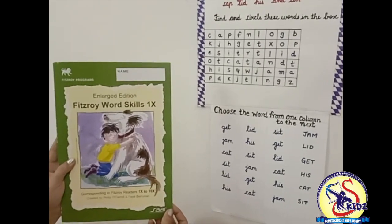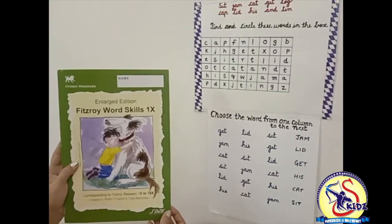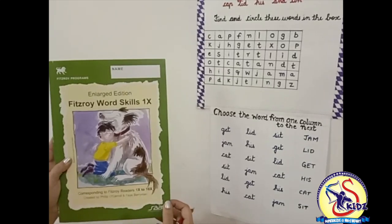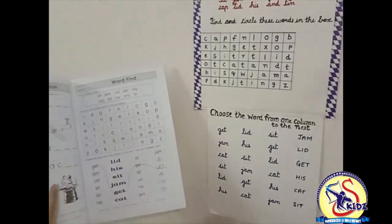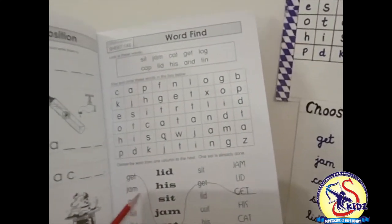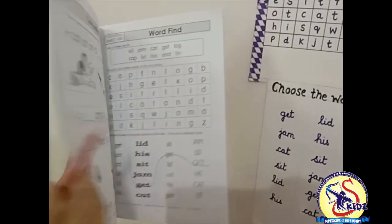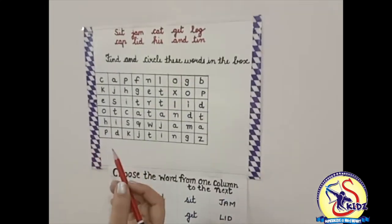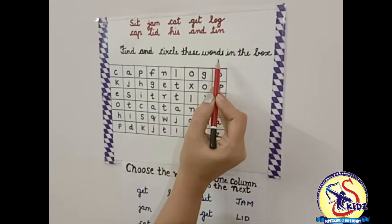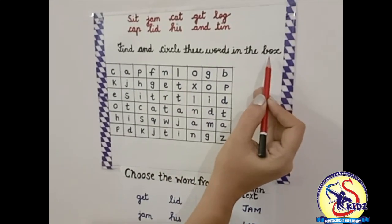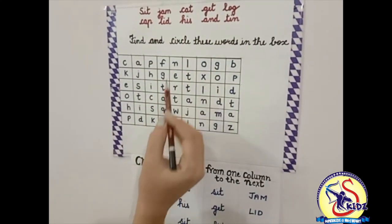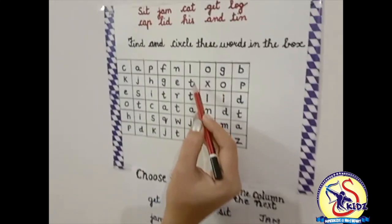Students, how are you all? I hope you all are fit and fine. As you all know, this is our book Fitzroy What Skills. Today we are going to do one more page from this book. In this page we have two exercises, so let's do these exercises today. Our first exercise is: find and circle these words in the box. Some words are given for you — you have to find these words in this box.